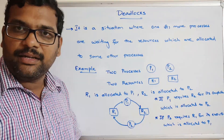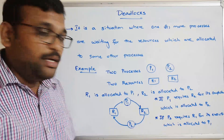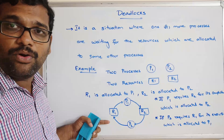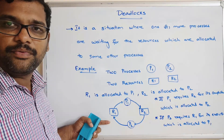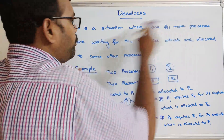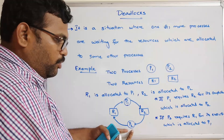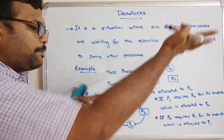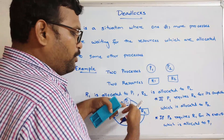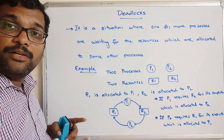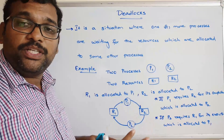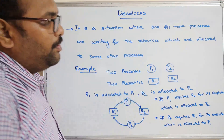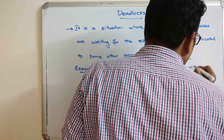Such a situation we call a deadlock. It's a situation where one or more processes are waiting for resources which are allocated to some other process — for example, P2 is waiting for R1 and P1 is waiting for R2.